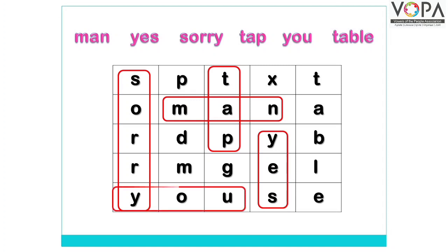और वो word You यहाँ पर है। इस तरह बच्चों, आपको इन words को तलाश करके इन्हें circle भी करना है — इस तरह यहाँ पर circle हो रहा है। आखिरी word है Table और Table हमें यहाँ पर नज़र आया। तो बच्चों आप समझ गए होंगे कि इन words को इस grid में किस तरह तलाश करना है।